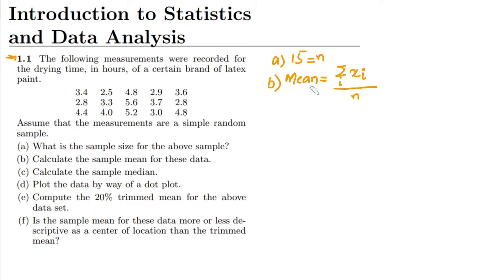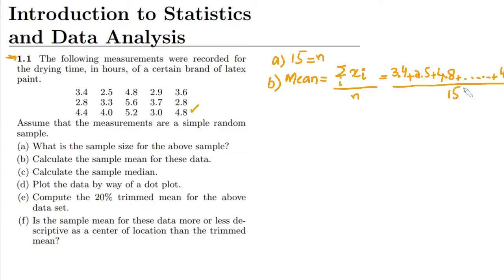So I sum them all together: 3.4 plus 2.5 plus 2.5 plus 4.8, and so on up to the final sample 4.8, adding them all together and then dividing over n which is 15. Adding them together and dividing by 15, I get 3.79, which is the sample mean of the data.